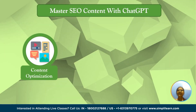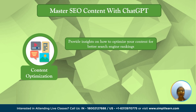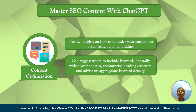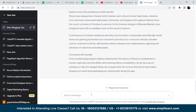Next we have content optimization. ChatGPT can provide insights on how to optimize content for better search engine rankings. It can suggest where to include keywords naturally within your content, recommend heading structure, and advise on appropriate keyword density. So for the blog we already created, let's find some optimizations.